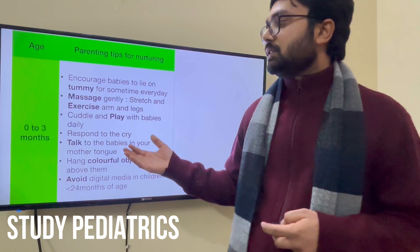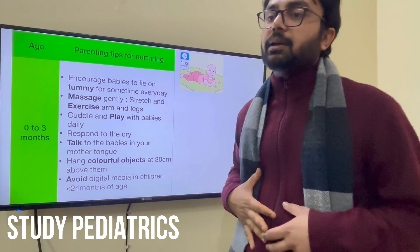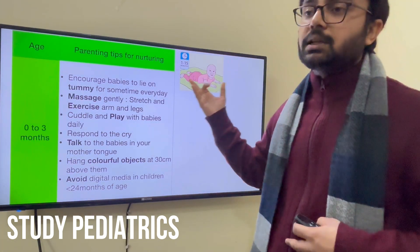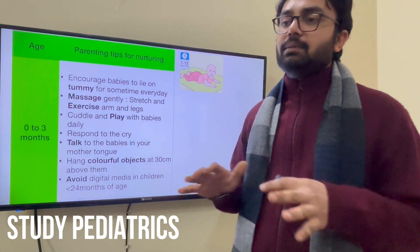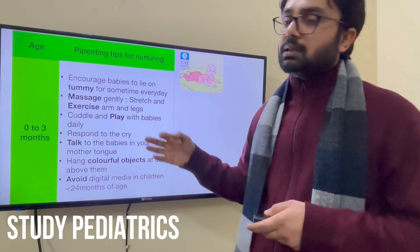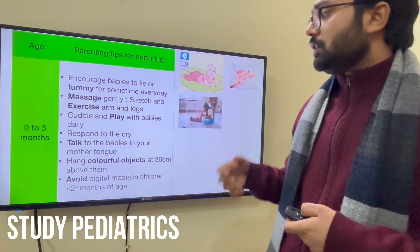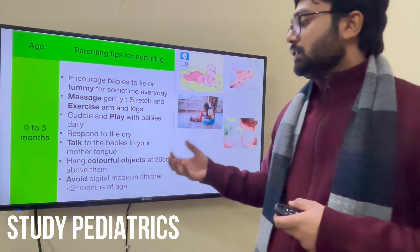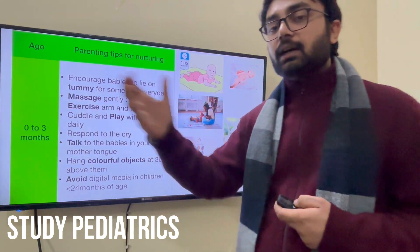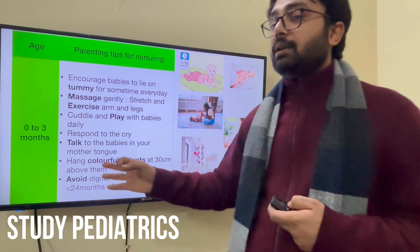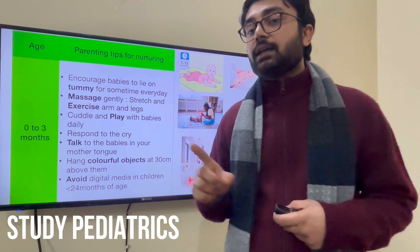Now, how to counsel parents. For 0 to 3 months, encourage tummy time — placing the baby on the tummy helps pass gas and also strengthens neck muscles. Gently massage the baby, do exercises, cuddle and play with the baby, and talk to them in your own mother tongue so that bonding develops. Hand colorful objects so the baby can hold them and develop a better grasp. One very important point: avoid mobile phones and screen time below 24 months.